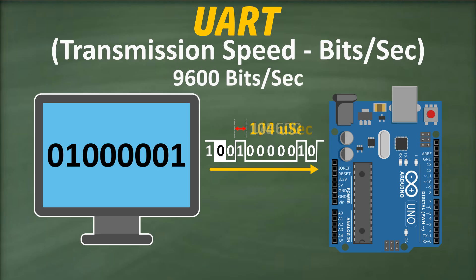To avoid errors in communication, both the sender and receiver must agree on the same transmission speed beforehand. Now, let's consider what happens when we transmit this same data packet at a speed of 9,600 bits per second, meaning that the width of each bit will be 104 microseconds.